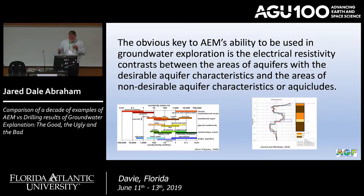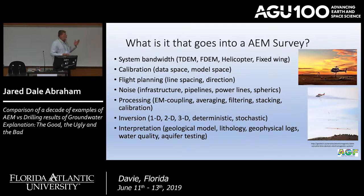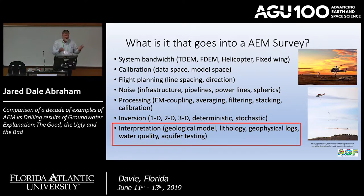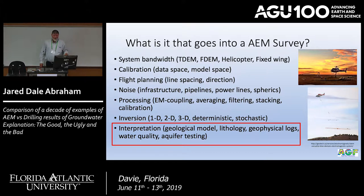What goes into an airborne survey? System bandwidth — is it frequency domain or time domain? Fixed wing or helicopter? Calibration. Data space and model space — where does that happen, how is it done? Flight planning: line spacing, directions of the lines, spacing in between the lines — Wade just showed us the difference in resolution. Infrastructure: power lines, spherics, all the things that go into making an airborne EM successful. Processing: removing coupling, averaging, filtering, stacking, calibration. Inversion: 1D, 2D, deterministic, stochastic — all of those are parts.